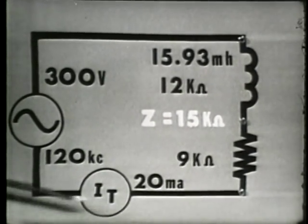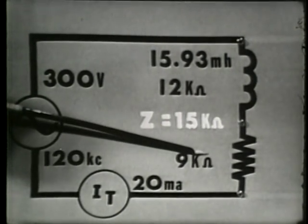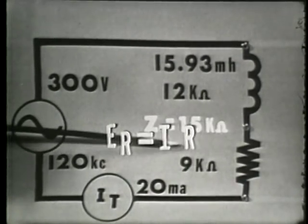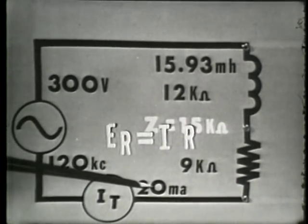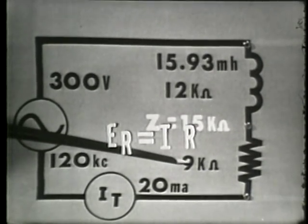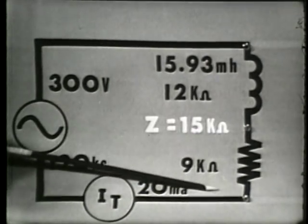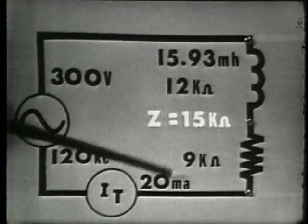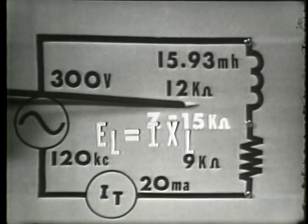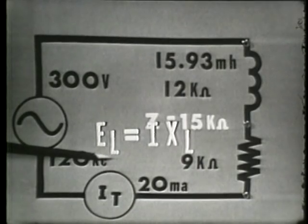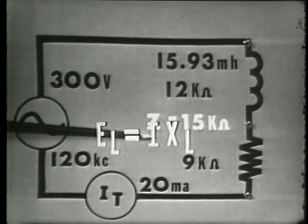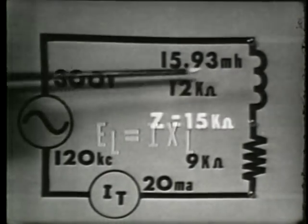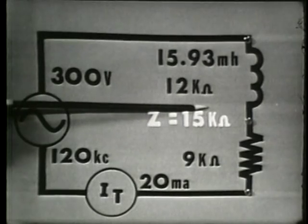This 20 milliamps must flow through the 9 K ohms of resistance. Therefore the voltage across R is equal to I times R — 20 milliamps times 9 K ohms — or 180 volts. This 20 milliamps flowing through our inductive reactance of 12 K ohms means the voltage across the inductor equals 20 milliamps times 12 K ohms, or 240 volts dropped across the inductor.